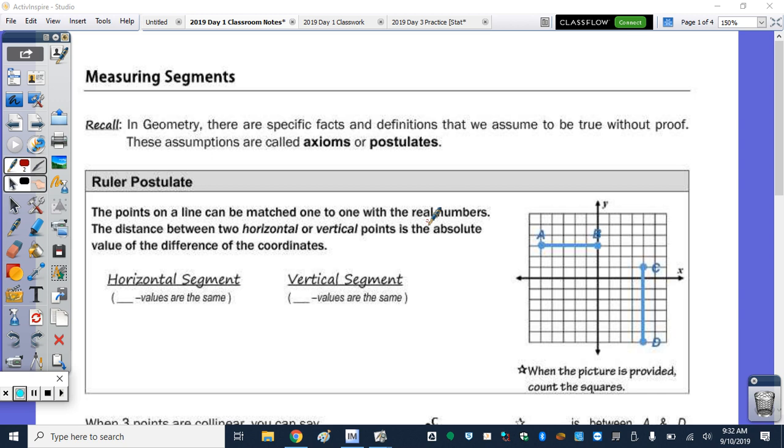In geometry, there are specific facts and definitions that we assume to be true without proof. We're not going to prove everything this year. And those are your axioms or postulates. The first postulate is the ruler postulate. The ruler postulate says that the points on a line can be matched one-to-one with the real numbers. The distance between any horizontal or vertical segment has a different formula than that of a slanted segment - it's the absolute value of the difference of the coordinates.